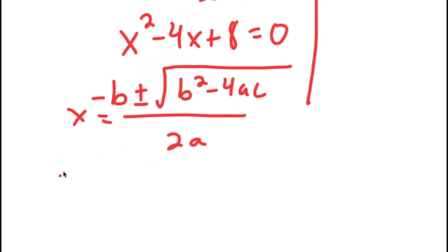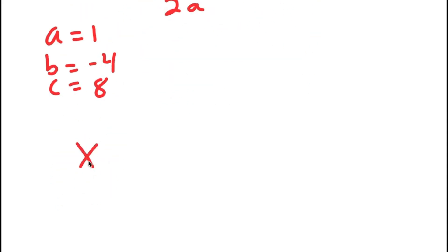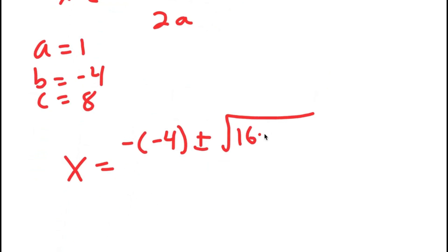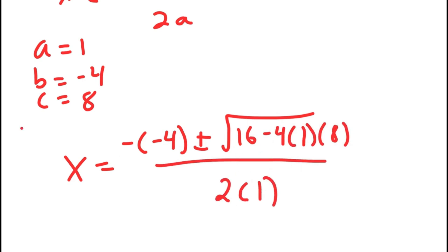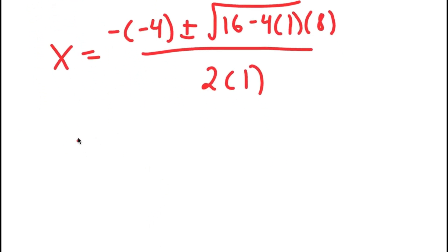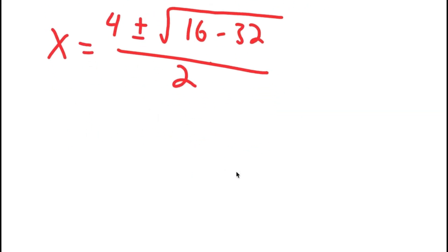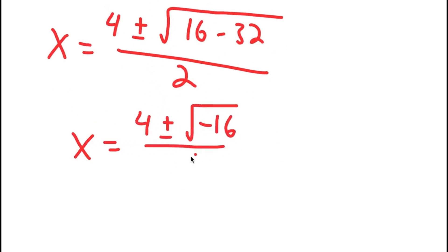In this case, a is 1, b is −4, and c is 8. So I get x = −(−4) ± √(b² − 4ac) / 2a, which is (−4)² = 16, minus 4 times 1 times 8, all over 2 times 1. This is equal to 4 ± √(16 − 32) over 2, which is equal to 4 ± √(−16) over 2.